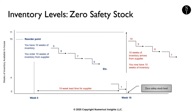Safety stock is how much inventory you want to keep as a buffer to deal with sources of variation. I'll get into those sources of variation in a moment. For now, we'll pretend that we use up inventory at the same rate every week, so we can predict exactly when we run out.